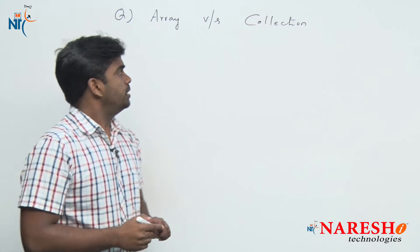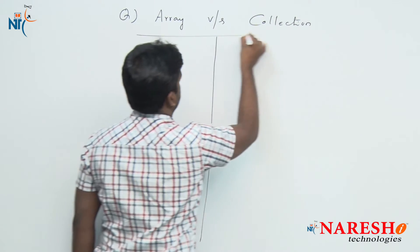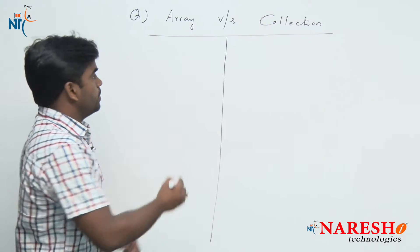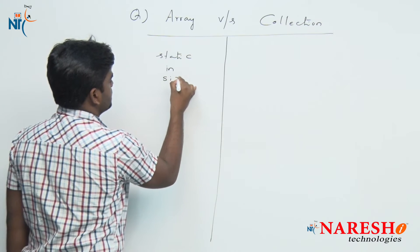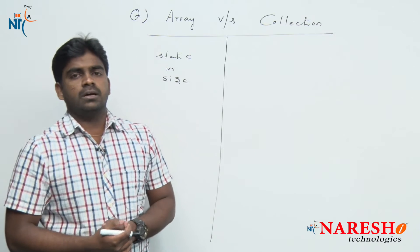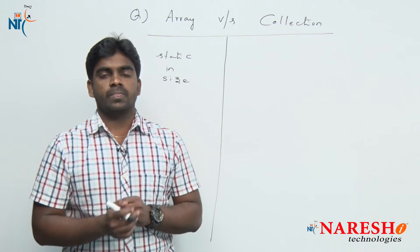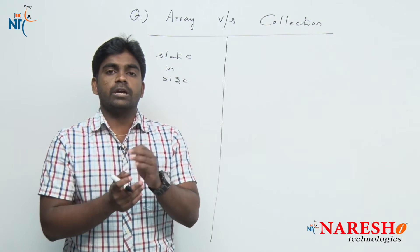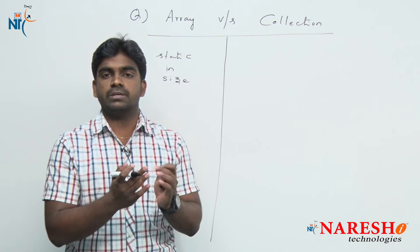The main differences between arrays and collections: first of all, arrays are static in size. What does static mean? It is very simple — the size is fixed. Once you allocate memory to an array in Java, that memory you cannot change. You cannot increase and you cannot decrease it — the size is fixed.